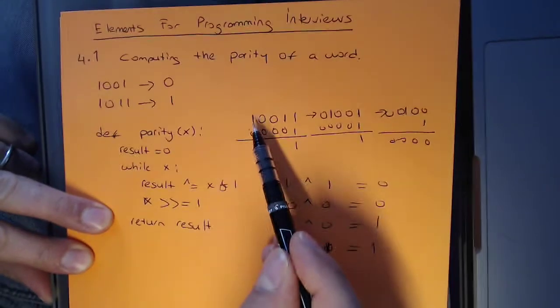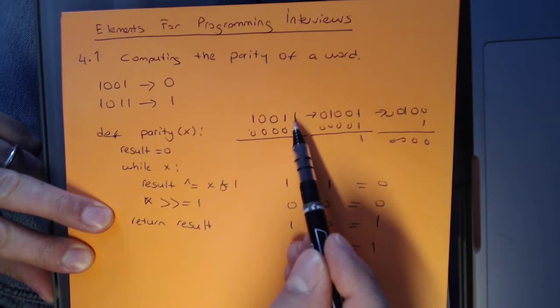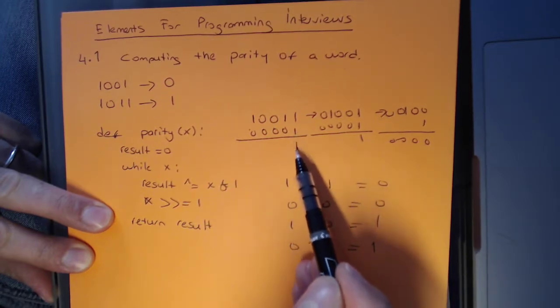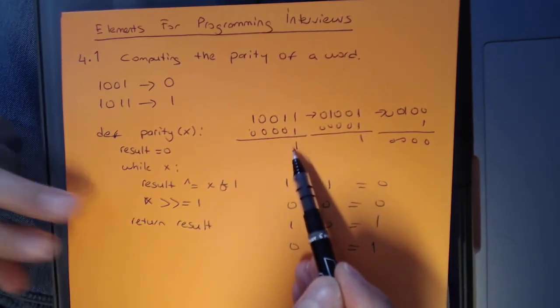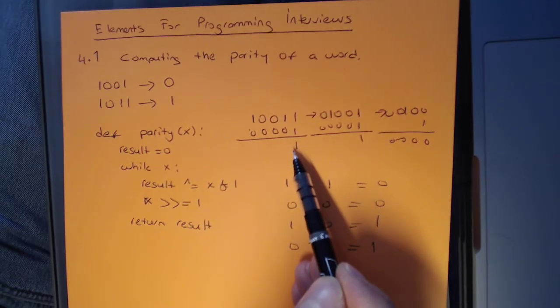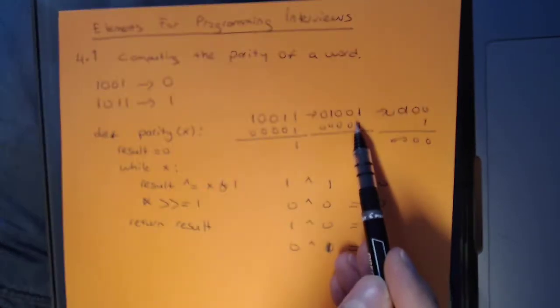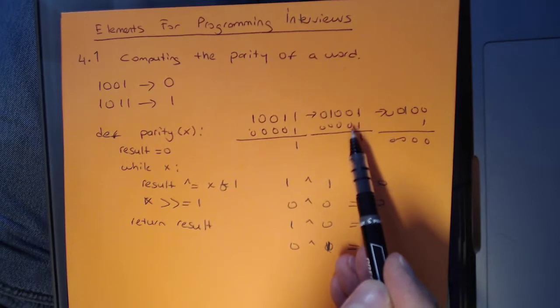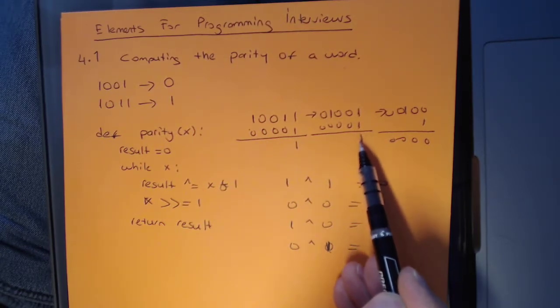So when we start here with 10011, our first number ANDed with 1 is going to give us 1. Currently, we have only 1 bit set. That means the parity is odd. But then we right-shift and go to this number and AND it with 1 again.